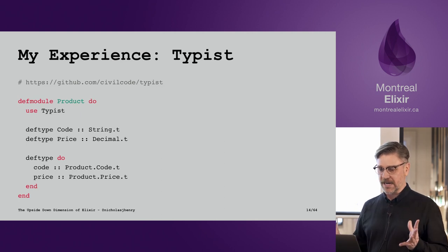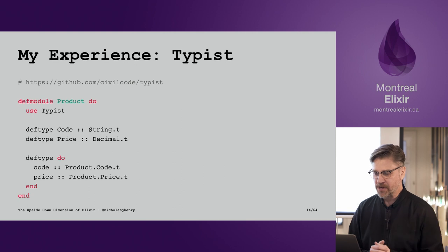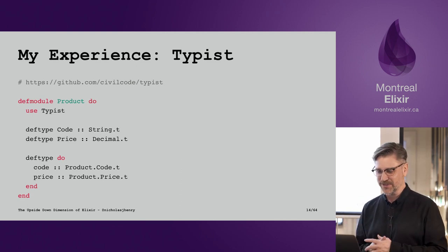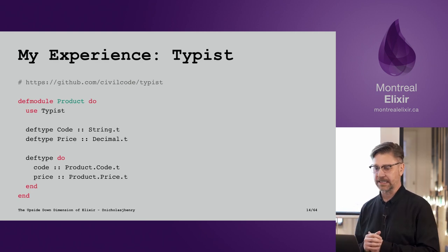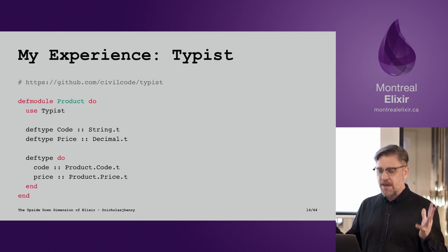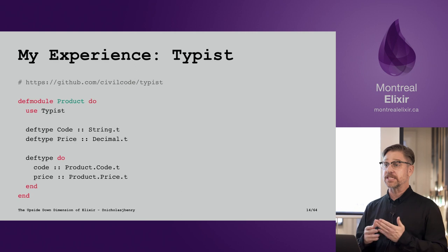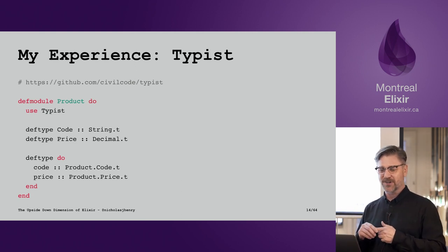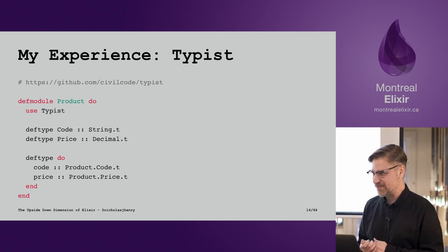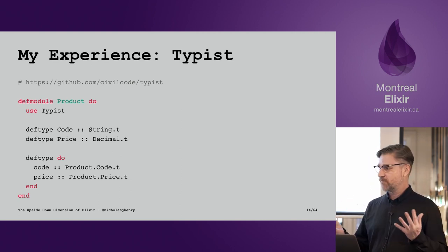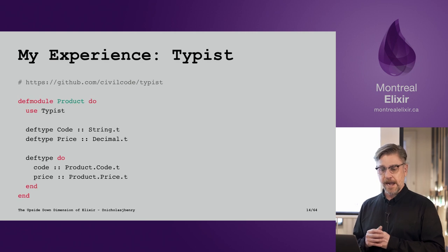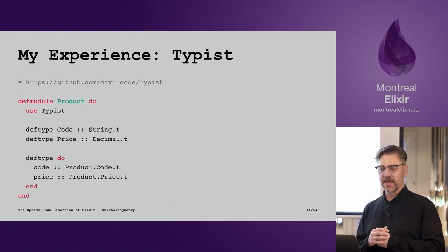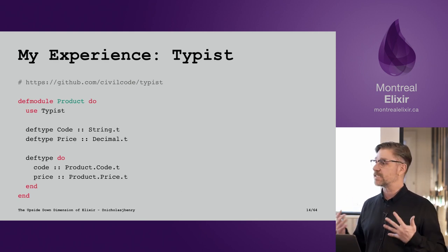Just to give a little background on my experience with metaprogramming: I wrote a library called Typist, mostly for personal use, to help define types in a very succinct way in Elixir. It demonstrates those three things — if you've ever created a struct and defined a type spec in Elixir, it gets a little verbose. This library allows you to remove that duplicate code. It's closer to the domain in terms of defining types, and the syntax feels like a first-class citizen in Elixir.